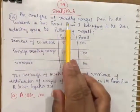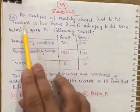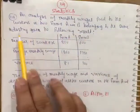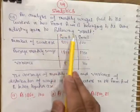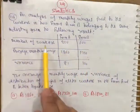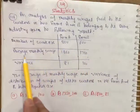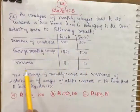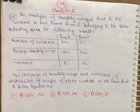An analysis of monthly wages paid to workers in two firms A and B belonging to the same industry gives the following results. Firm A has 500 workers and firm B has 600 workers. Average monthly wages are 1860 for A and 1750 for B. Variance is 81 for A and 100 for B.